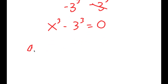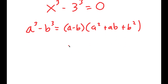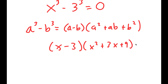Now from here, if I have something in the form a to the power of 3 minus b to the power of 3, this is equal to a minus b times a squared plus ab plus b squared. So this turns into x minus 3 times x squared plus 3x plus 9 is equal to 0.